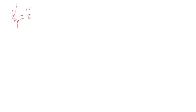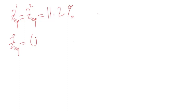Since we are dealing with the same system, the positive sequence impedance and the negative sequence impedance — the equivalent positive and negative sequence impedances — are still 11.2%, as calculated in the previous videos. The neutral grounding resistor will only affect the zero sequence impedance. Since I now have resistance involved, I have to write R plus jX for each impedance.